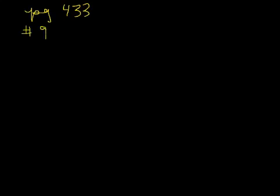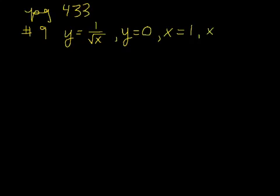Okay, on number 9, we have several curves here that we're working with. We have the curve y equals 1 over square root of x, then we have the line y equals 0 which is the x-axis, then we have the line x equals 1, that's a vertical line that goes through where x is 1, and then we have another vertical line where x is 5. So I have 4 curves there.